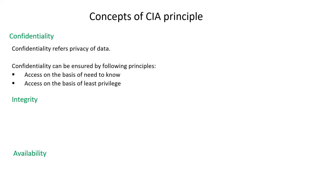Let us understand what confidentiality is. It refers to the privacy of data — data should be available only to the person who is authorized to access it. This can be ensured by the following principles: access to be provided on the basis of need-to-know, and access to be provided on the basis of least privilege.